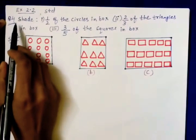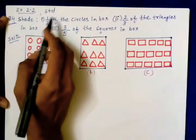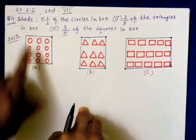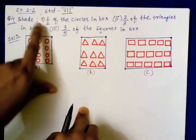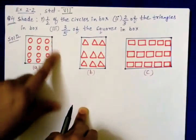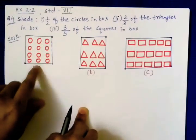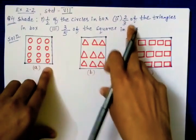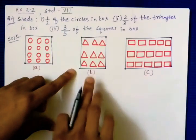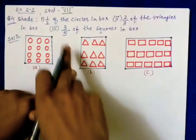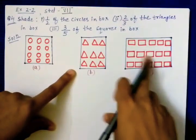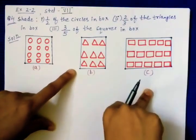Now we will see question number 4 of exercise 2.2, standard seventh. The question says: shade first one is half of the circles in the box. Second is two-thirds of the triangles in the box. Third is three-fifths of the squares in the third box.